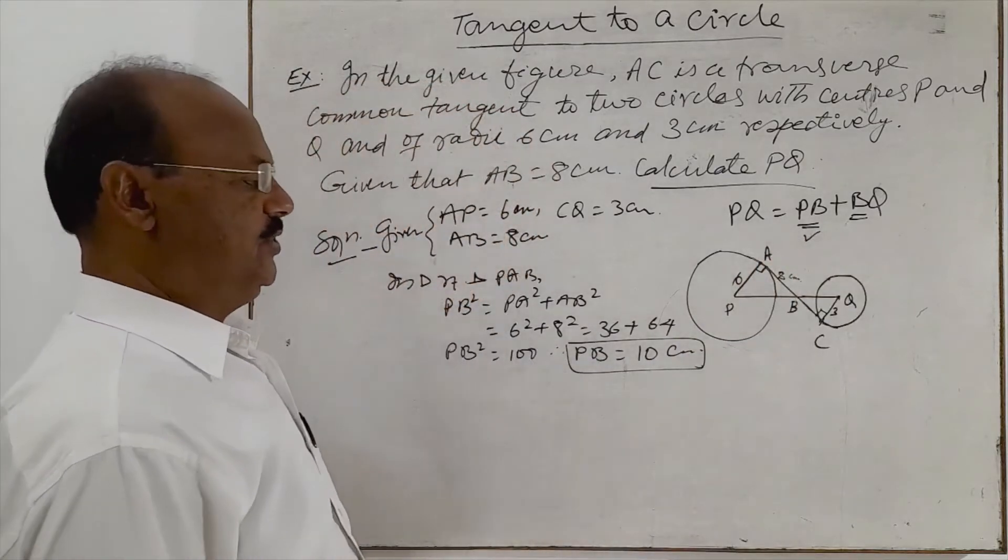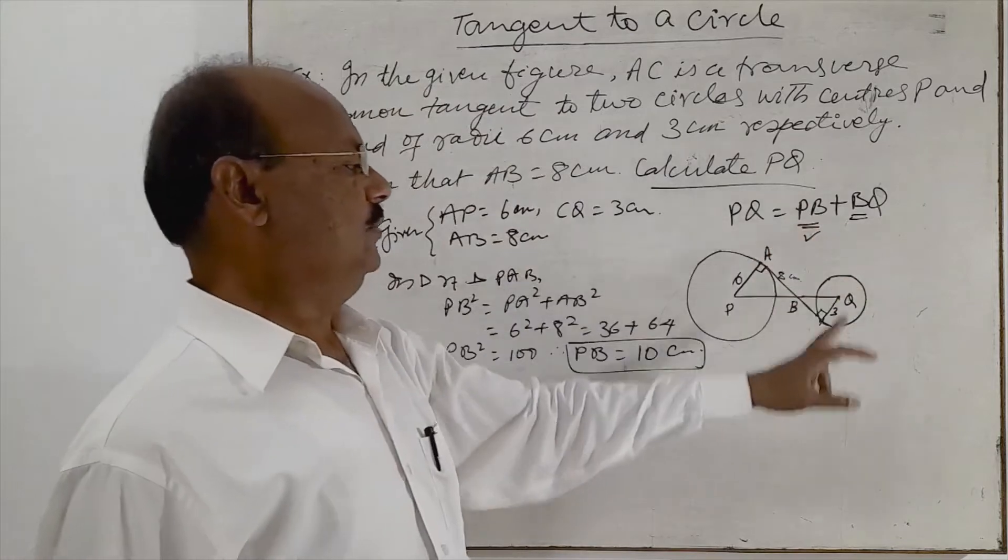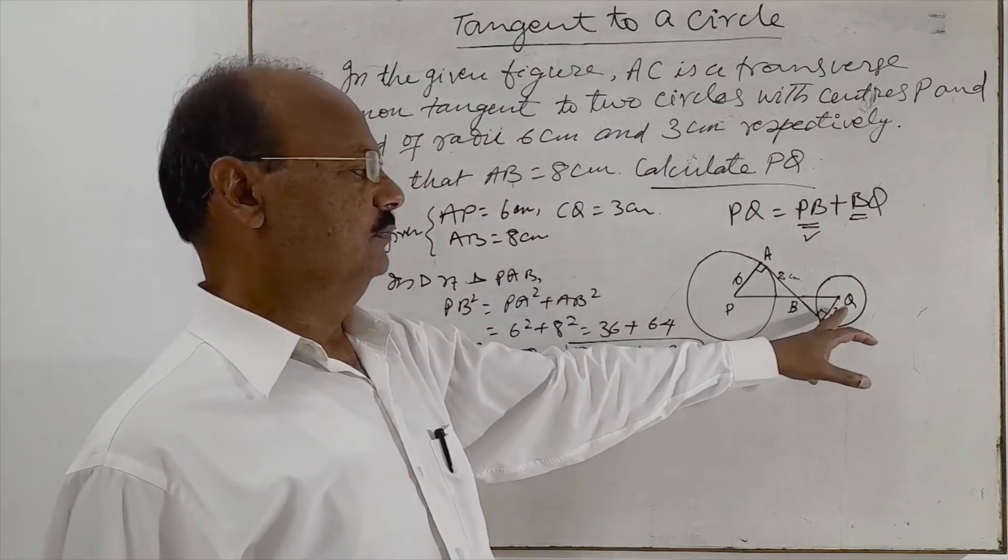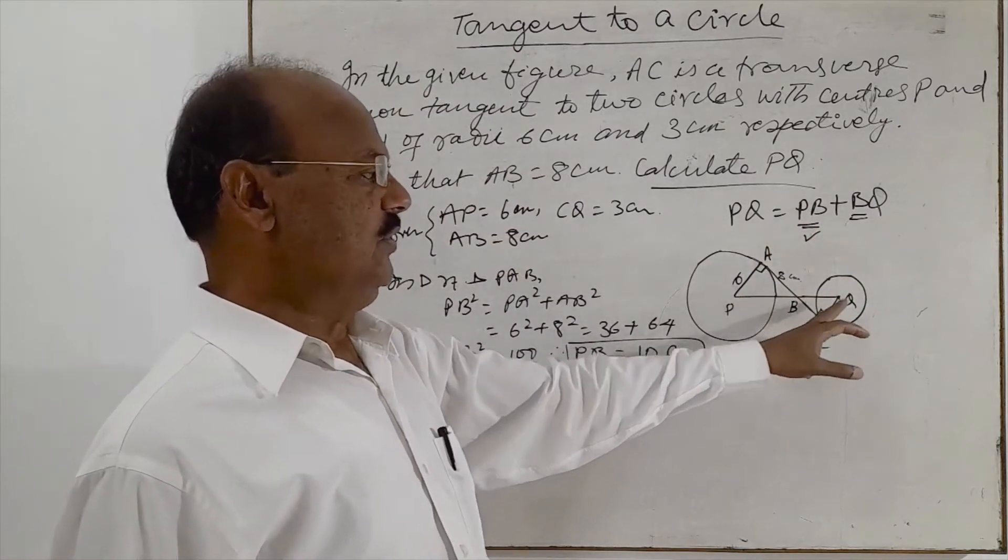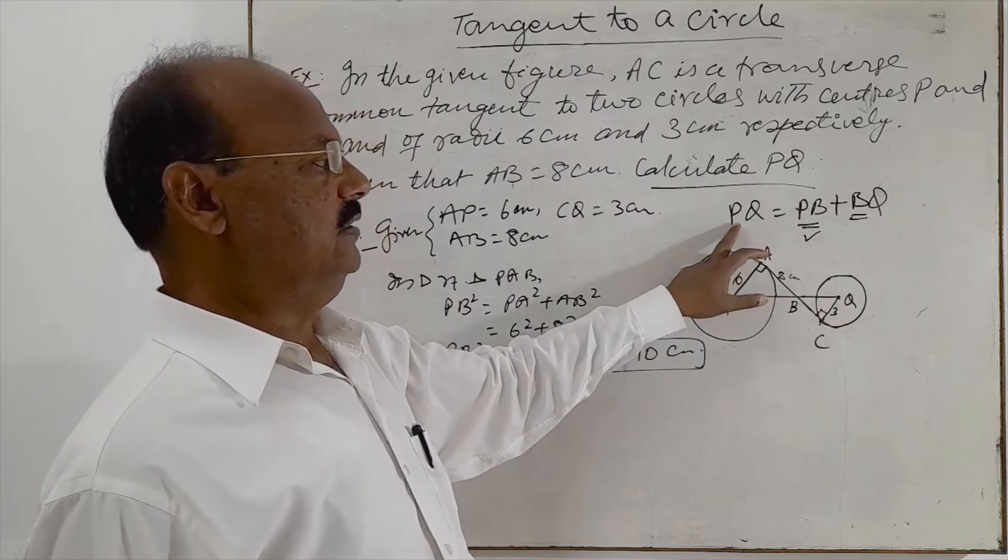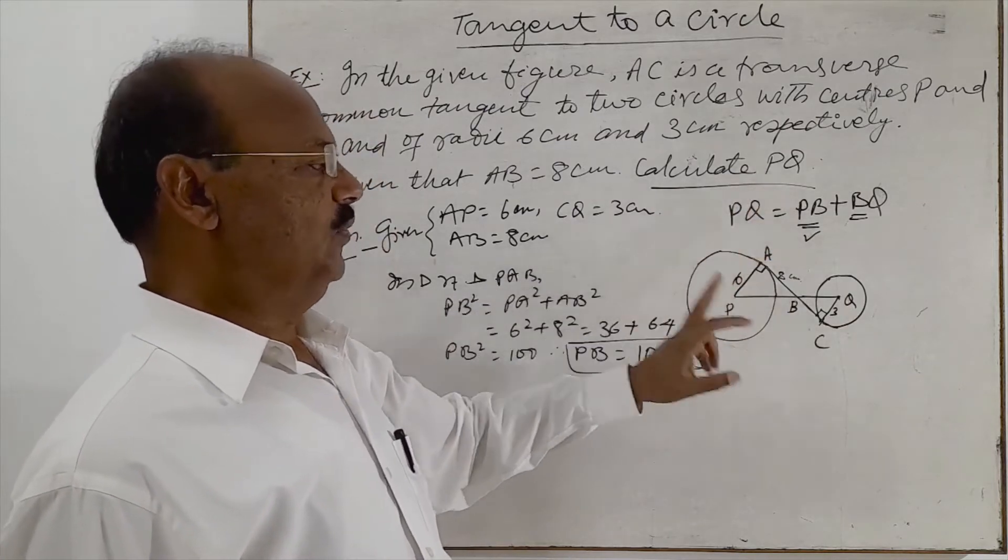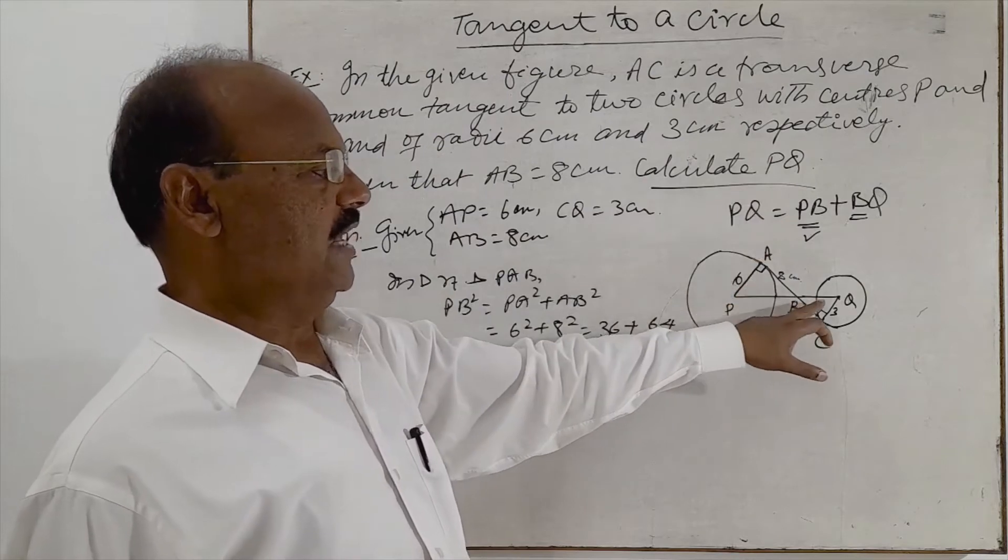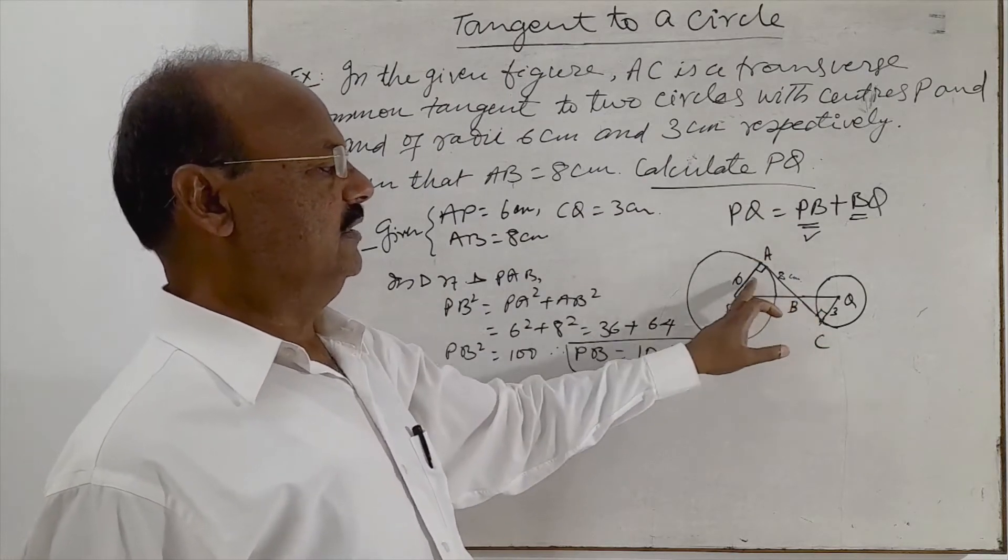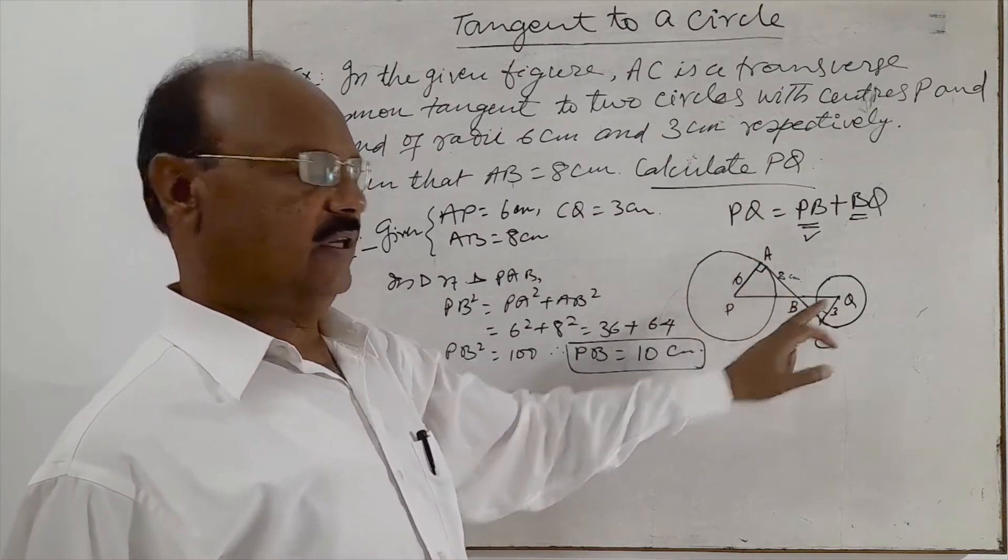Now we have to find out BQ. Then by adding PB and BQ, we will get the required length PQ. Now let us take these two triangles and we show that these two triangles are similar.